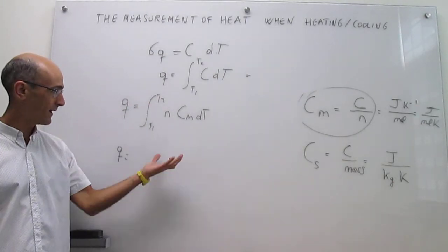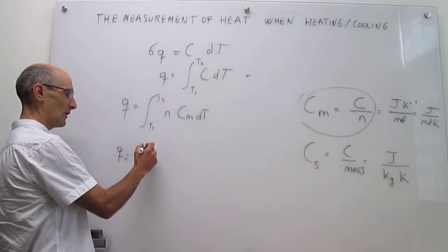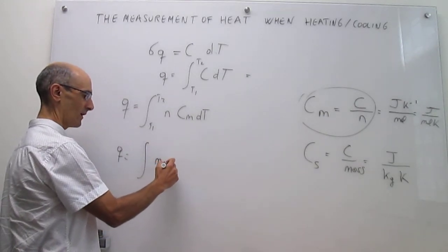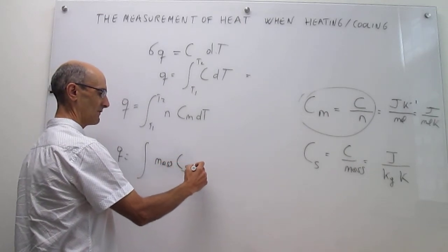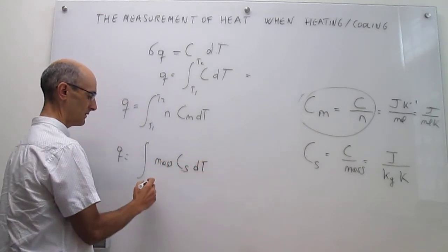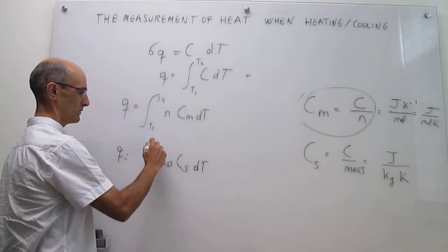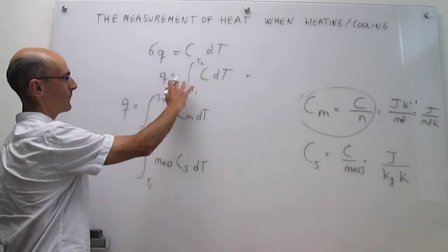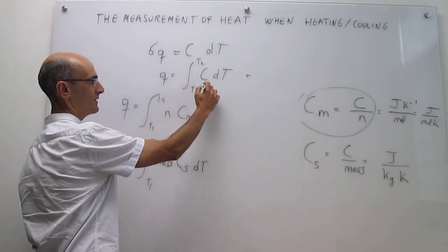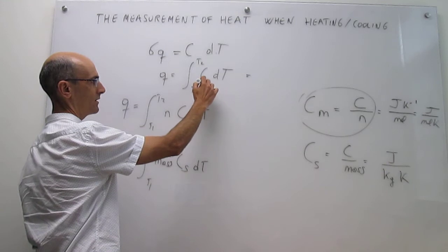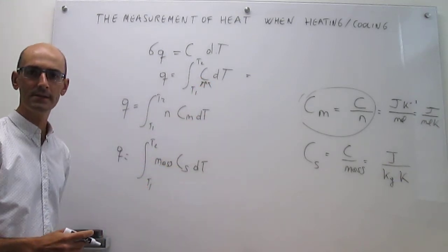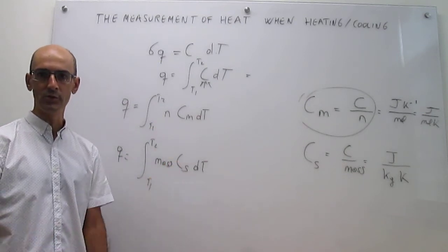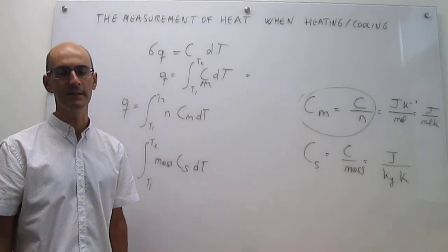If you have specific heat capacities, the expression for heat becomes Q = integral from T1 to T2 of m·Cs·dT, where m is the mass and Cs is the specific heat capacity. All the expressions are very similar in pattern; you just need to figure out whether you have a molar heat capacity or a specific heat capacity.